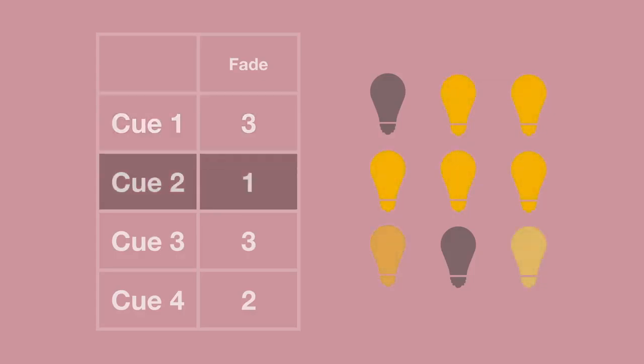Cue's a bit snappy. Let's add fade times to smooth that out. A cue's fade time always affects how long it takes to transition into that cue.